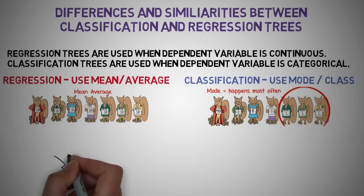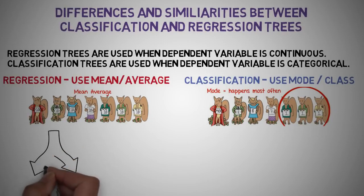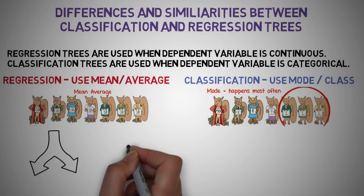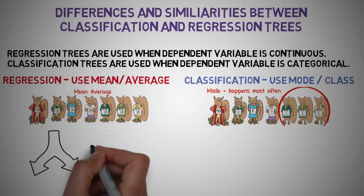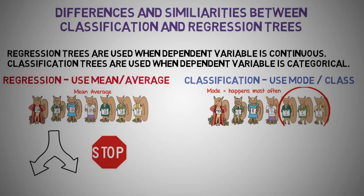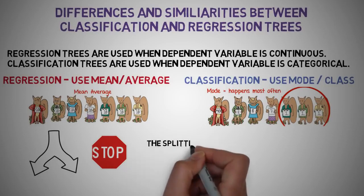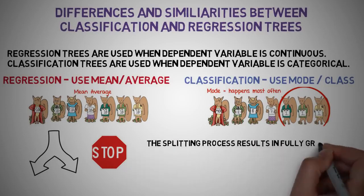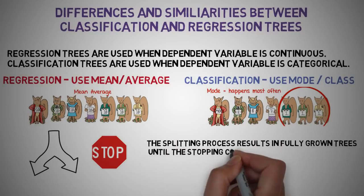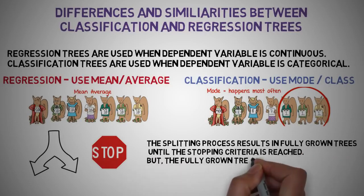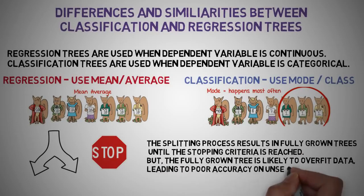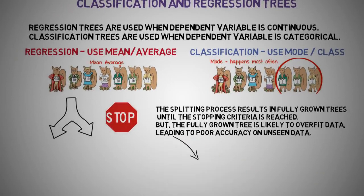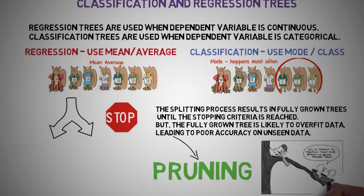This splitting process is continued until a user-defined stopping criteria is reached. For example, we can tell the algorithm to stop once the number of observations per node becomes less than 50. In both cases, the splitting process results in fully grown trees until the stopping criteria is reached, but the fully grown tree is likely to overfit data, leading to poor accuracy on unseen data. This brings pruning, one of the techniques used to tackle overfitting.